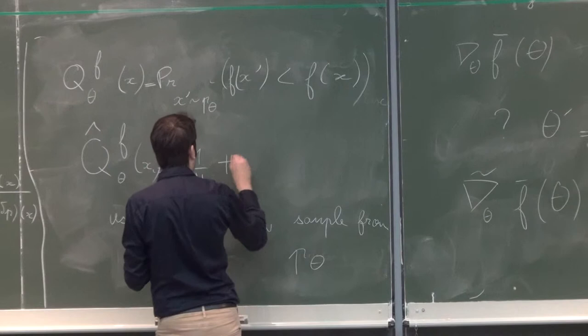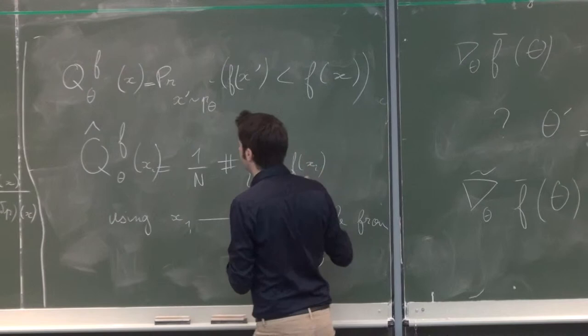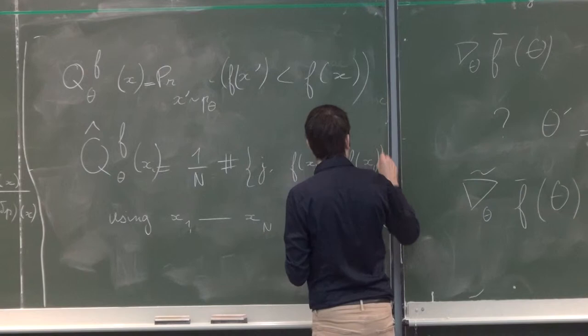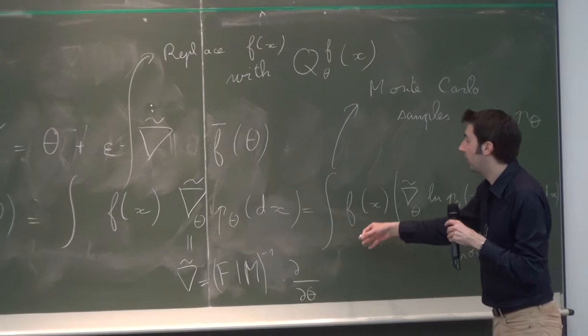So it's 1 over n times the number of j—the quantity of xi is the proportion of samples that are worse than xi. And so now you have replaced all your expectations over p theta with samples, and you have practical algorithms that you can use.